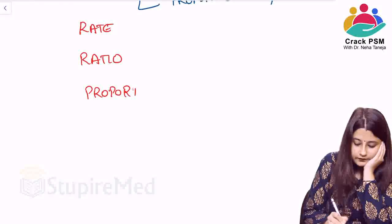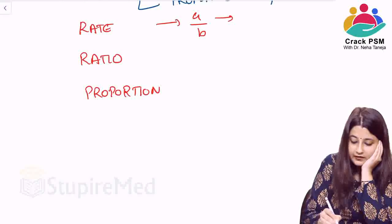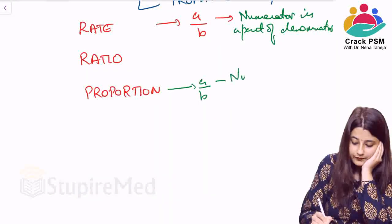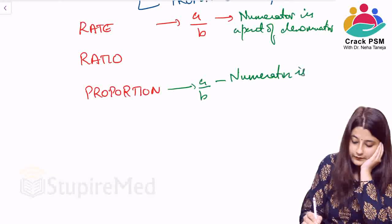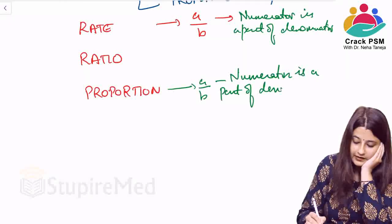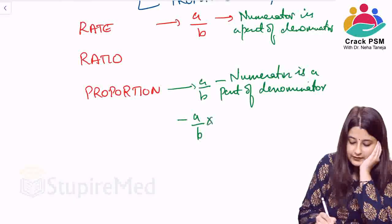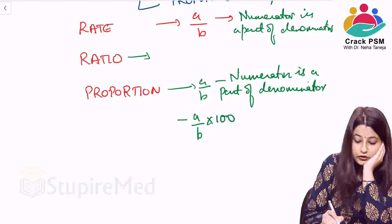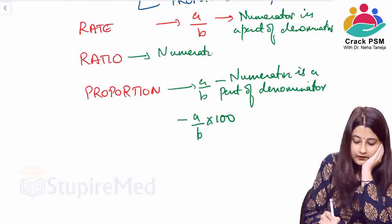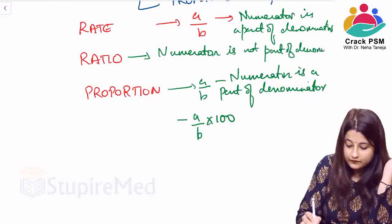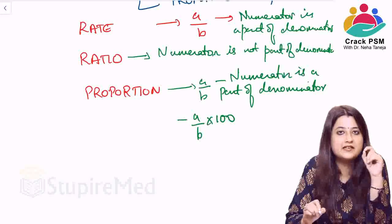So to summarize the three basic tools of epidemiology: in rate, numerator is a part of denominator; in proportion, numerator is a part of denominator but the multiplier is 100; in ratio, the numerator is not a part of the denominator.